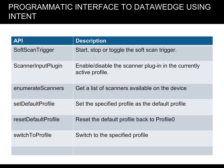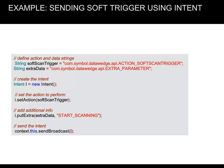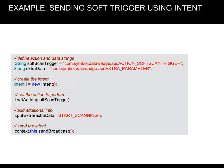Even though Data Wedge can be pre-configured for most of your needs, there may be occasions when you would want to modify its behavior during runtime. This can be achieved using Android intents as the ones shown here. Here's an example of receiving data using intent, and here's an example of sending a soft trigger using intent. URLs where you can find more information on the programmatic interface to Data Wedge using intent are also provided.